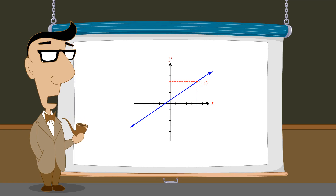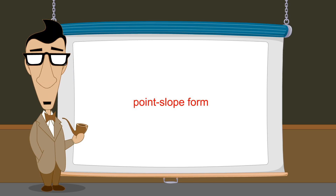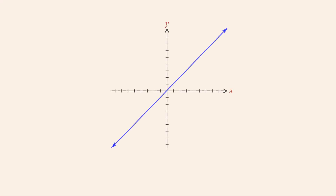There is another form of the equation for a line which we can use in this situation, called the point-slope form. Using the point-slope form, in addition to the line's slope we only need to know the coordinates of one point somewhere on the line. The point-slope form can be derived by using the formula for slope which we learned in the previous chapter.